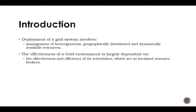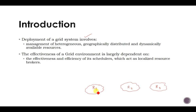To understand the necessity of a grid scheduler, let us first understand what happens when we deploy a grid system. Deployment of a grid system involves management of heterogeneous, geographically distributed, and dynamically available resources. The resources are not in a central place — they are available in different locations, and they are dynamic, meaning resources can be created and destroyed during the execution of a job.